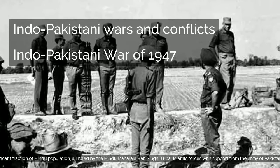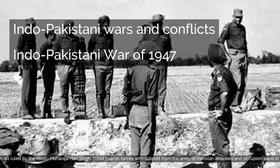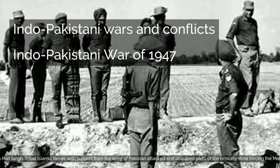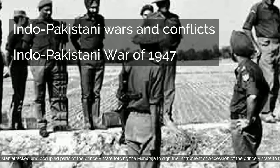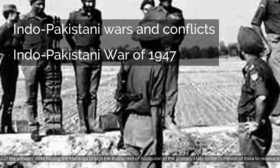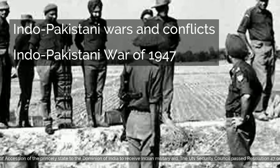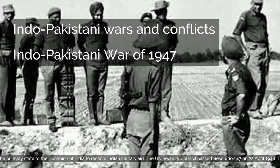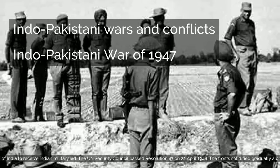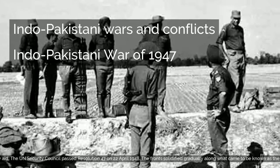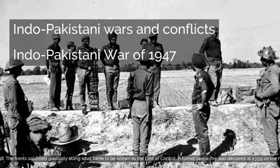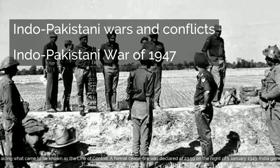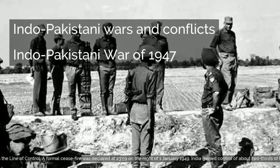Tribal Islamic forces with support from the Army of Pakistan attacked and occupied parts of the princely state, forcing the Maharaja to sign the instrument of accession of the princely state to the Dominion of India to receive Indian military aid. The UN Security Council passed Resolution 47 on April 22, 1948. The front solidified gradually along what came to be known as the Line of Control. A formal ceasefire was declared at 23:59 on the night of January 1, 1949.